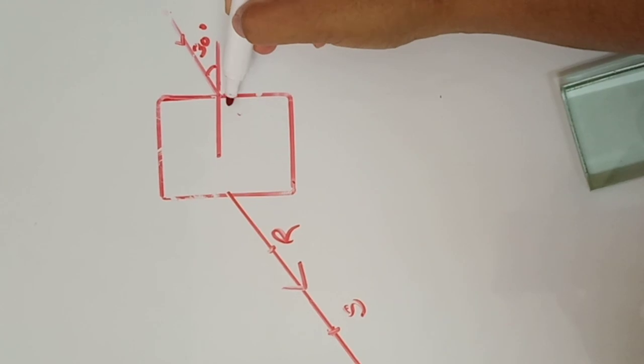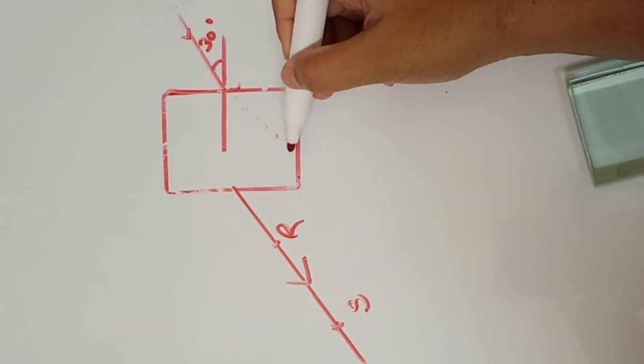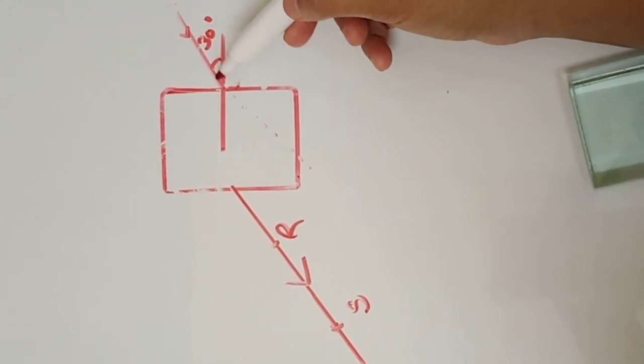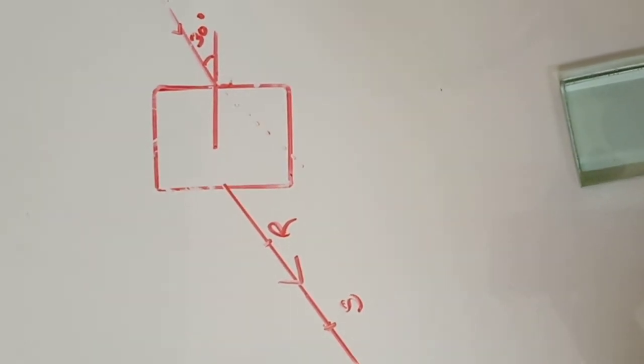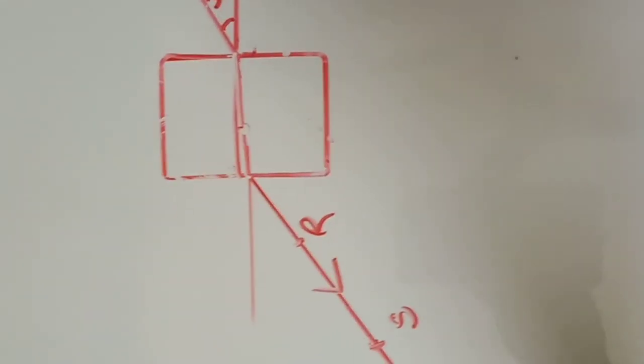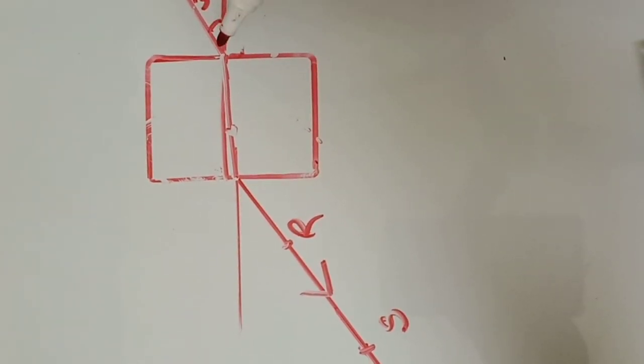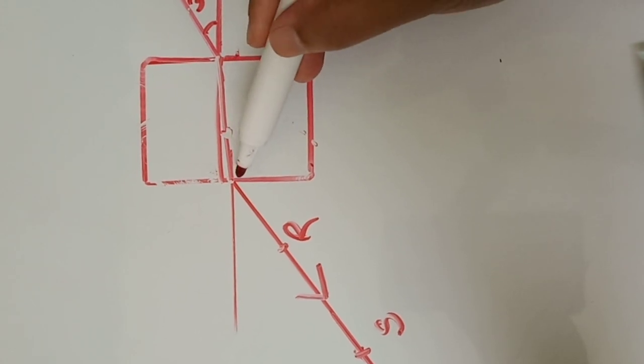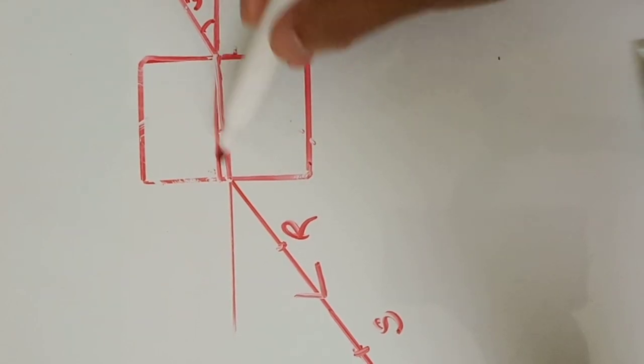Now we will see what exactly has happened here. If there was no glass slab, light was supposed to go along this path, isn't it? Like the one that I have shown from a dotted line using a scale. So this was the original path. But because of the glass slab, what happened? Light did not go through that path but deviated. So what exactly has happened is: this incident ray first bent towards the normal because it is going from air to glass, rarer to denser.